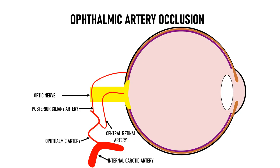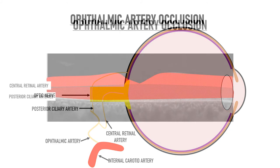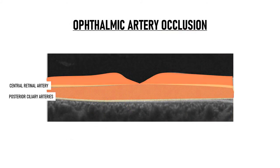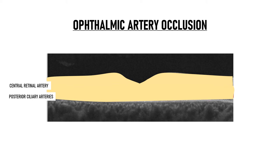In ophthalmic artery occlusion, since both the central retinal artery and the posterior ciliary arteries are branches of the ophthalmic artery, both the inner and outer retinal blood supplies are obstructed. Therefore, no cherry red spot is seen in ophthalmic artery occlusion, because both the retina and the choroid are deprived of their blood supply and turn ischemic.